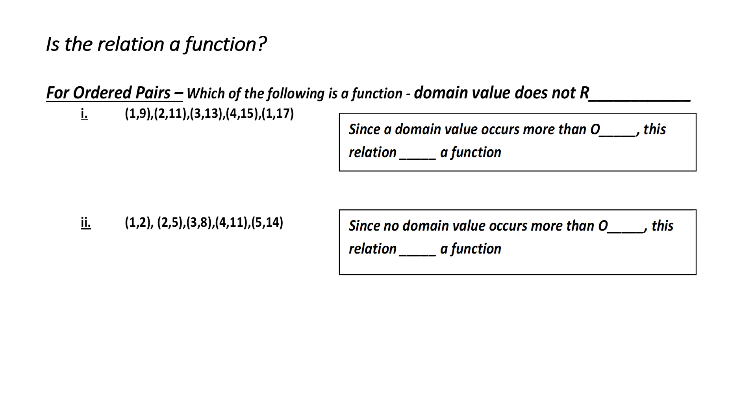What happens if we're talking about ordered pairs? It's the same thing as table of values. We look for the fact that domain values don't repeat. Let's look at my first example. Notice, I've got two 1s. Two 1s means that the same input or domain value has two range values. So, the answer for 1 can be 9 or 17. Since the domain value occurs more than once, this relation isn't a function.